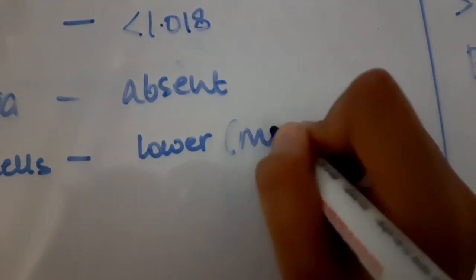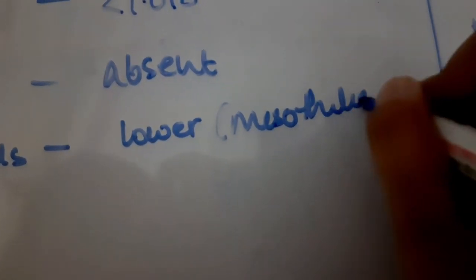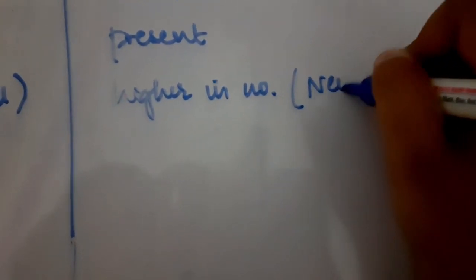The cells that are seen in transudates are mesothelial cells whereas the cell types seen in exudates are neutrophils.